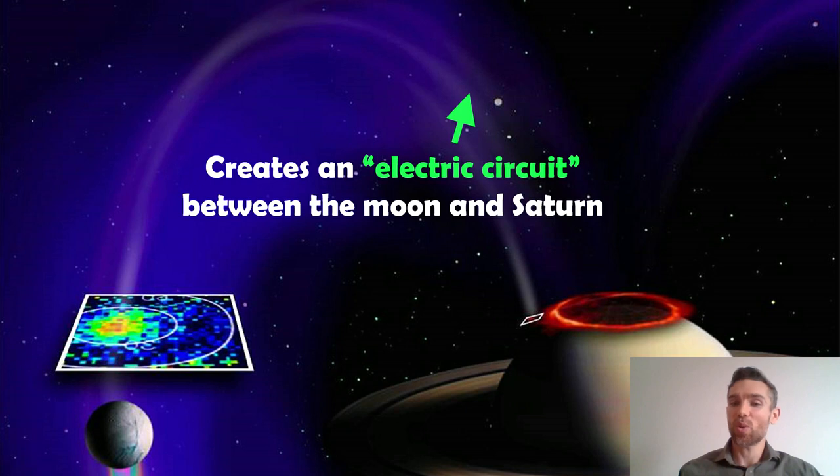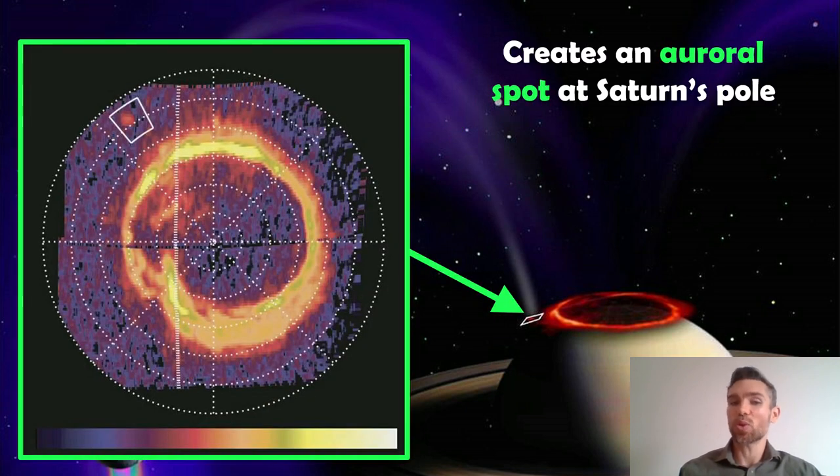So it creates this electric circuit between the moon and Saturn. So what does that actually do? Well, it does something quite interesting actually. It creates an auroral spot. So we know we have the aurora on Earth, the northern and southern lights caused by the solar wind. If you look here, this is looking at the polar region of Saturn. And the ring is the normal aurora from the solar wind, which we get on Earth. Lots of other planets have the same one. But there is in that white box, a small spot. And that is that electrical circuit being created between the moon and Saturn. Those charged particles are flowing onto this auroral spot on Saturn's pole. And as the moon goes around Saturn, that auroral spot will also wander about as well. So that's another very interesting thing about this moon, Enceladus.